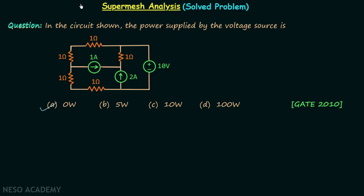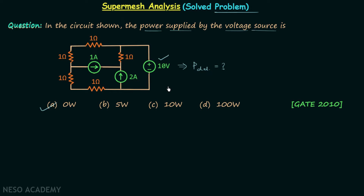In the last lecture I explained what super mesh is and how to perform super mesh analysis. Now in this lecture we are going to solve one problem using super mesh analysis. The problem is the same one we took in the KCL and KVL solved problem lecture. We are required to calculate the power supplied by the voltage source, which we previously found to be zero watts using KCL and KVL. This time we are going to use super mesh analysis to obtain the same result.